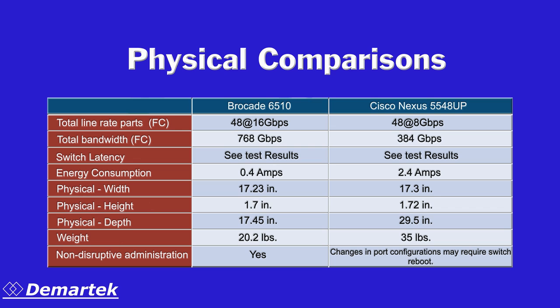First, let's examine the physical and environmental characteristics of the two switches. The Brocade switch supports fiber channel speeds up to 16GB per second, while the Cisco switch currently supports fiber channel speeds up to 8GB per second. While both switches support a total of 48 ports, the Brocade switch is smaller and consumes less power.